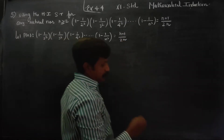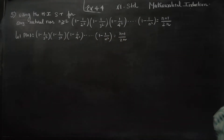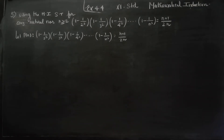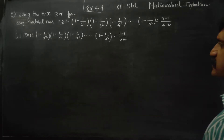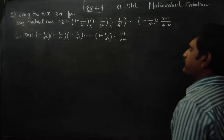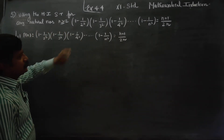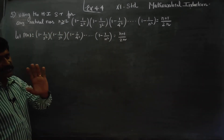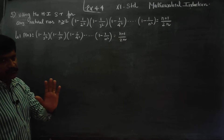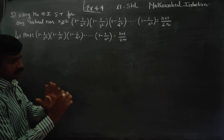First, name the statement as P of n. After naming the question statement as P of n, you have to verify the sum for n is equal to 1. That is the first term check.